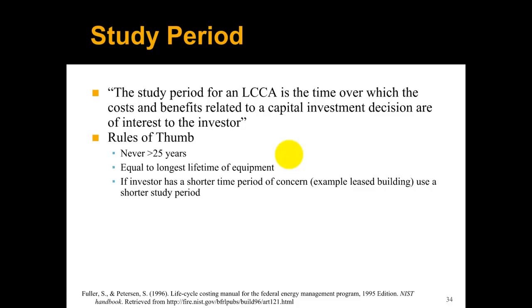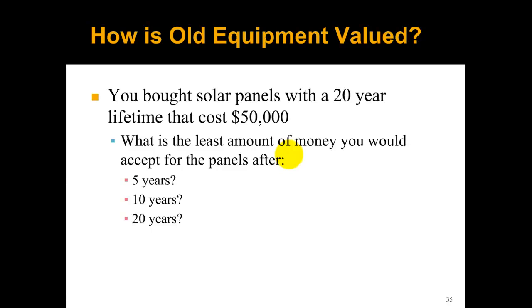As you can see, it leaves it relatively broad. Some rules of thumb to figure this out: the study period is never going to be greater than 25 years according to this lifecycle costing manual. It's going to be equal to the longest life of your equipment, so the piece of equipment that has the longest life. And if an investor has a shorter time period of concern, a good example here is if you have a leased building and you're only leasing the building for 10 years, you would want to make your study period for 10 years. Then you're going to make a shorter study period.